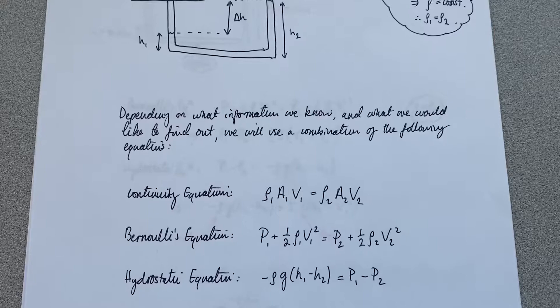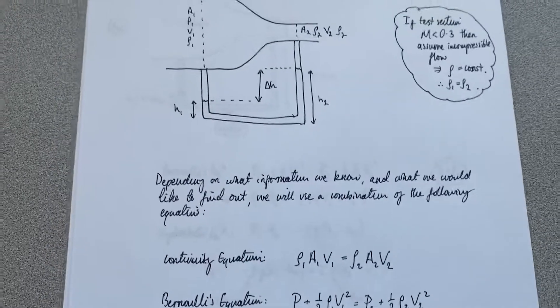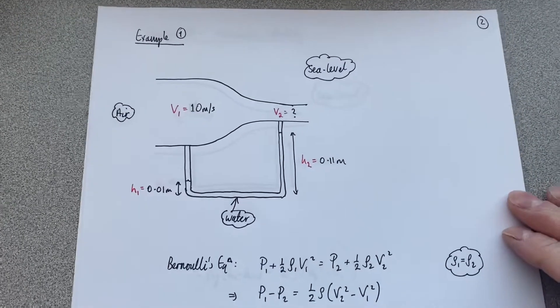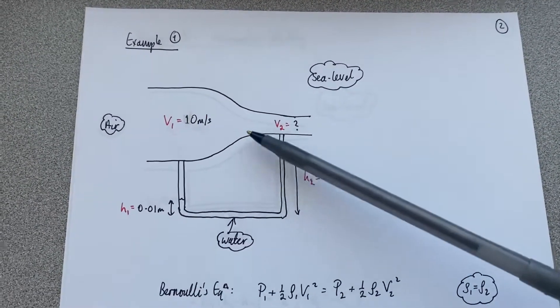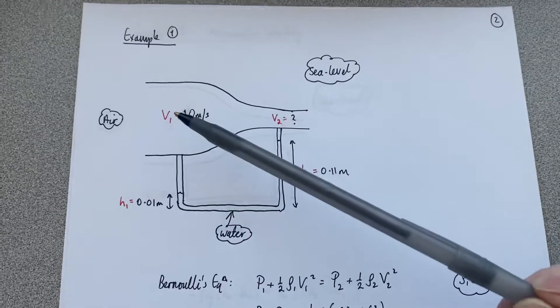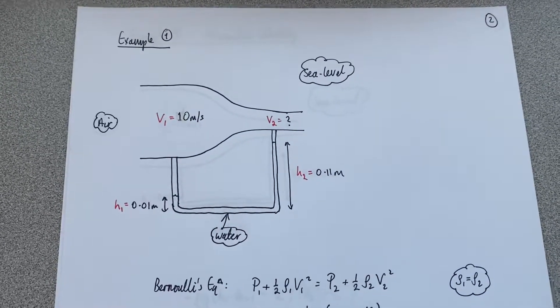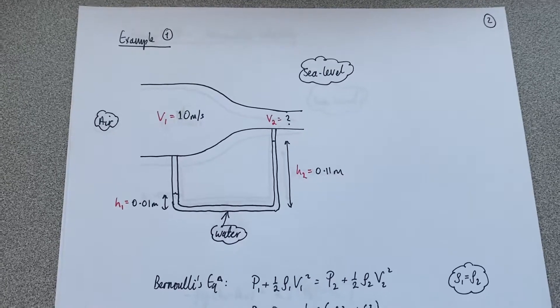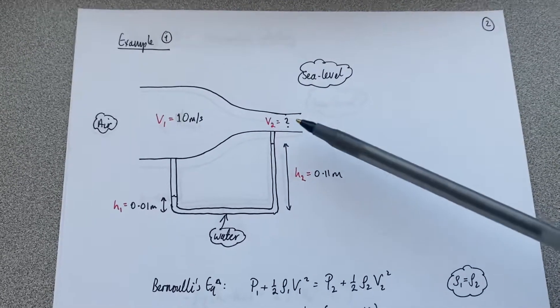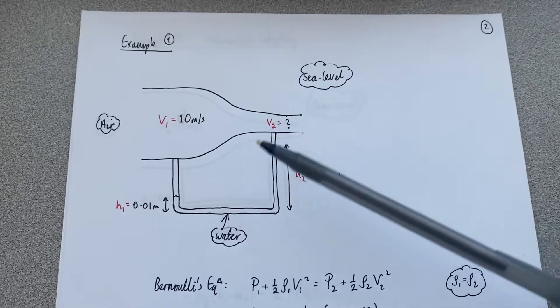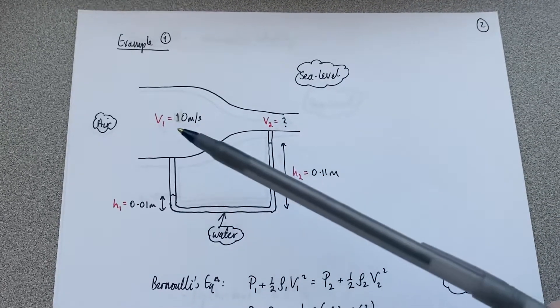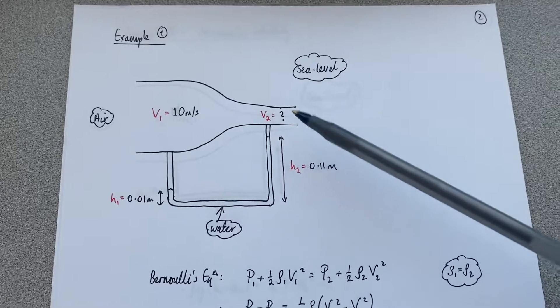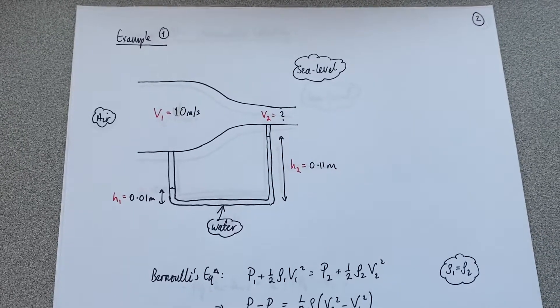So let's have a quick look at an example. In this first example here, I have the speeds in both the settling chamber and the cross-sectional area denoted here v1, v2, and they correspond to water levels h1 and h2. So I have three pieces of information and I need the fourth, right? In this case, v2.